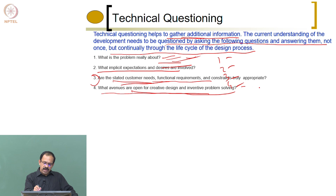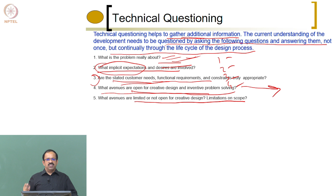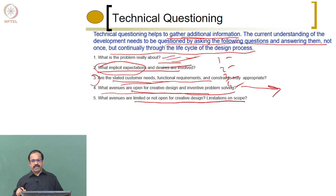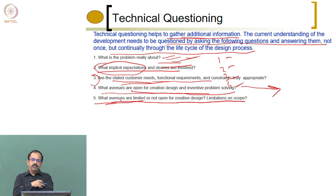If there are no avenues for creative design, that may not be a good product development exercise, because there is nothing much you can do with the product. The next question is: what avenues are limited or not open for creative design? Some implicit expectations mean you cannot really change certain things. For example, if you say that the cycle has to be pedaled manually, and someone is not interested in an electrical bicycle — only a manual one — then the avenue for converting to electrical is not open. That is limited, you are not going for an electric one.